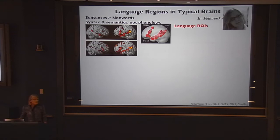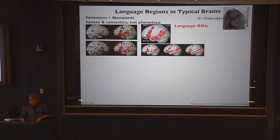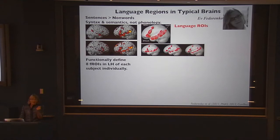In two typical subjects you see nice robust activations in all the places you'd expect. To identify those regions in each subject, Ev devised a way to look across subjects at the broader region where these activations land — those red regions — and intersect each individual subject's activation with those broader parcels to define in each subject eight different regions in the left hemisphere.